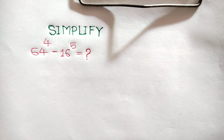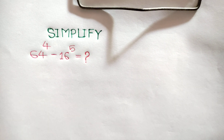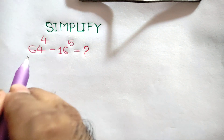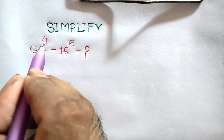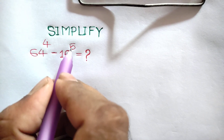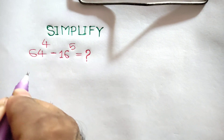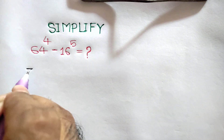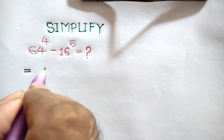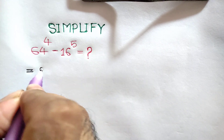Hi everyone. In this video I am going to show how to simplify this math problem: 64 to the power 4 minus 16 to the power 5. This is equal to — 64 can be written as 2 to the power 6, whole to the power...